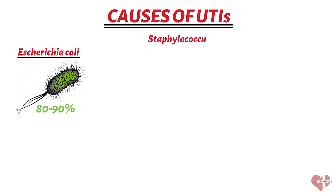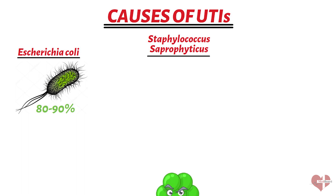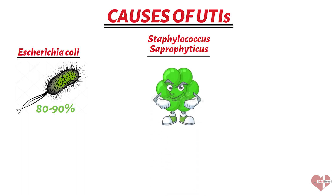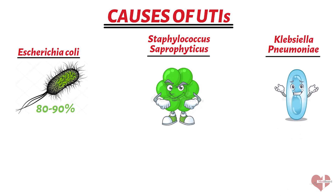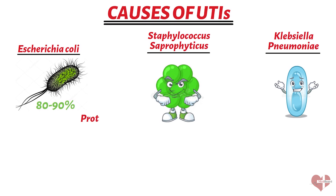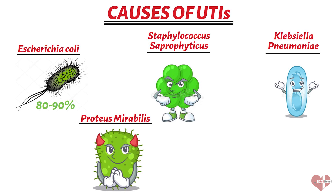Staphylococcus saprophyticus is a type of bacteria found on the skin and in the genital area. It is the second most common cause of UTIs in young women. Klebsiella pneumoniae is a type of bacteria found in the intestines and can cause an infection in the urinary tract. Proteus mirabilis is also a type of bacteria found in the intestines that can cause urinary tract infections.